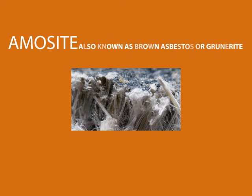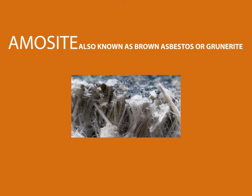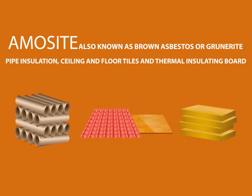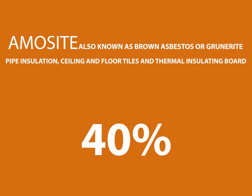Amosite, also known as brown asbestos or grunerite, was used most frequently in sheet and pipe insulation, ceiling and floor tiles, and thermal insulating board, which can contain up to 40% asbestos. It has needle-like fibres.